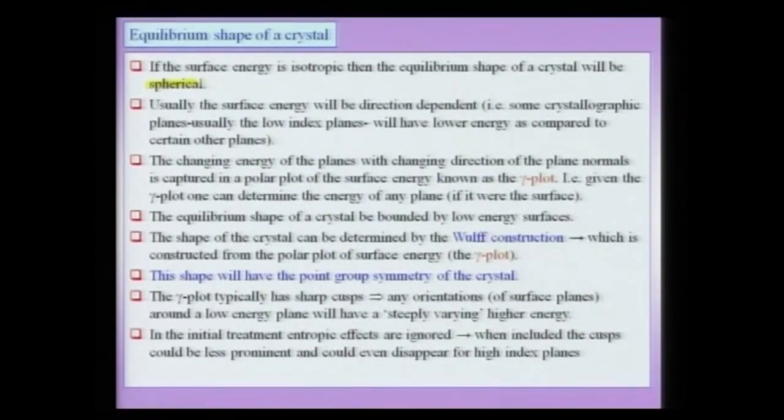Next, we go to another important topic: the equilibrium shape of a crystal. If the surface energy is isotropic — meaning it does not depend on the direction or the plane of the cut — then the equilibrium shape of the crystal is obviously going to be a sphere. If I cut the crystal on 100, 111, or even a 432 kind of index plane, it would not make a difference, and the equilibrium shape would be spherical. The equilibrium shape of the crystal should always be differentiated from the growth shape: in the growth shape, fast-growing planes exhaust themselves, and the crystal is left with slow-growing planes.